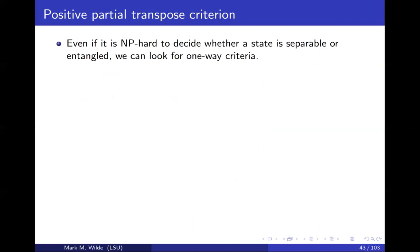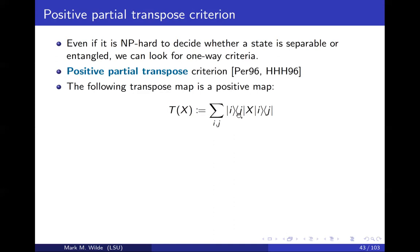In spite of that, we can try to do one-sided tests for entanglement, and one of the most famous tests is called positive partial transpose. So what is the meaning of this? This right here is a way to write the matrix transpose as a linear map. You input x and you sandwich it by i and j on both sides, and that will compute the transpose of this matrix x with respect to the basis delineated by i.